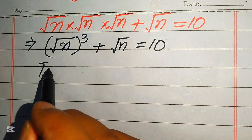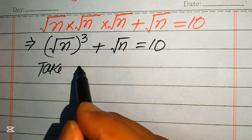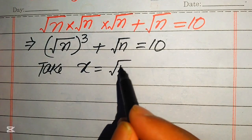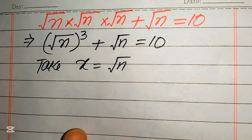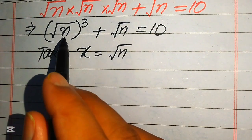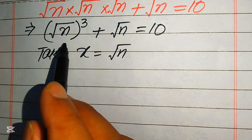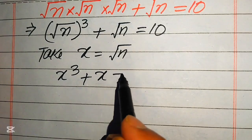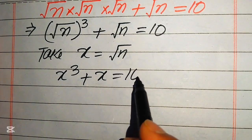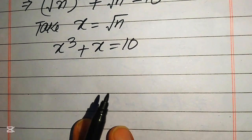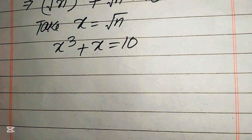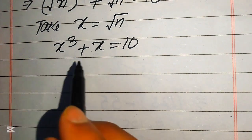For this, we take x equals to square root of n. So when we substitute x equals square root of n, the equation is written as x cubed plus x equals 10. This equation becomes a cubic in the variable x, and now we can easily find the values of x from here.